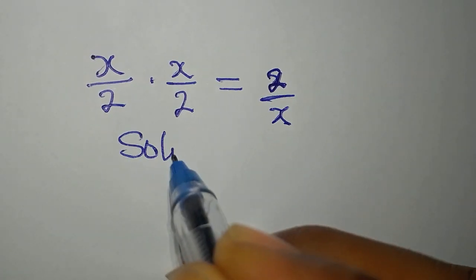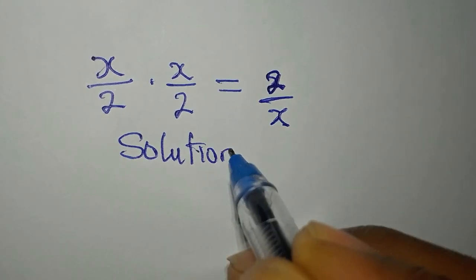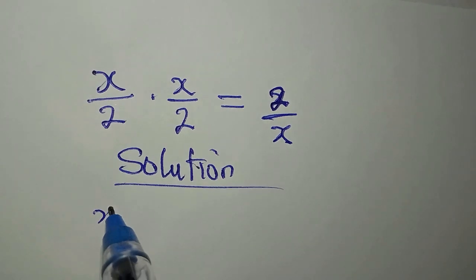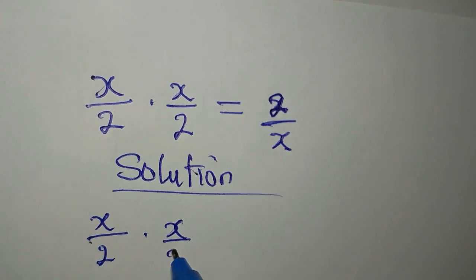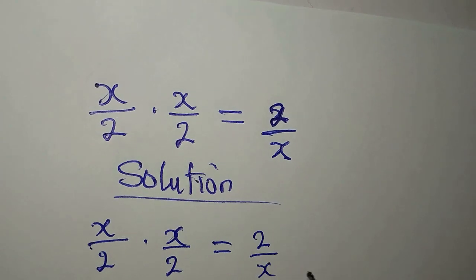Hello everyone. Let's provide the solution to this problem: x over 2 times x over 2 equals 2 over x.